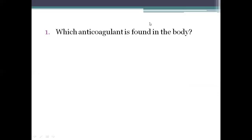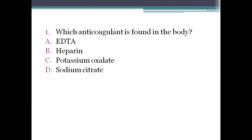First question: which anticoagulant is found in the body? Option A: EDTA. Option B: heparin. Option C: potassium oxalate. Option D: sodium citrate. The right answer is option B, heparin.